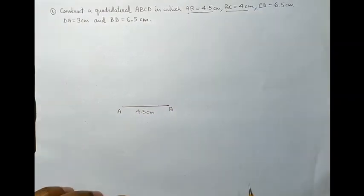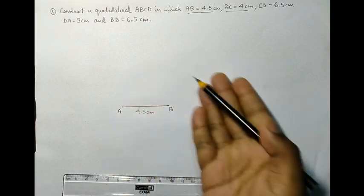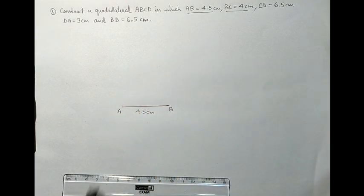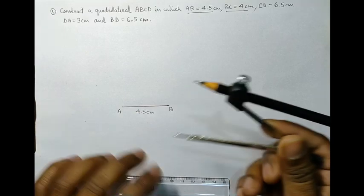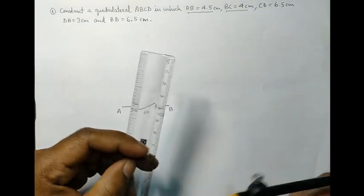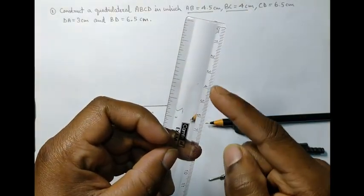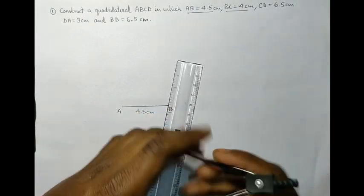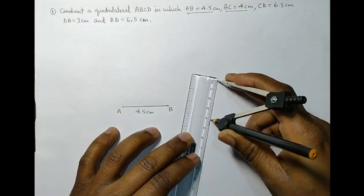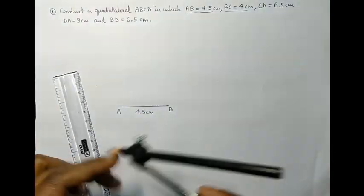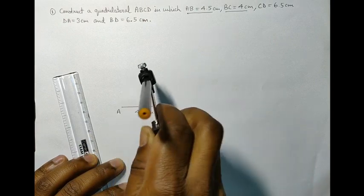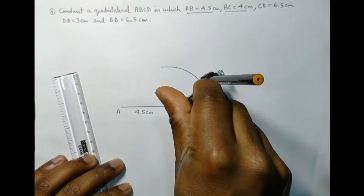Now, the next measurement is given for BC, but we don't know where C is. So we will simply take the radius 4 cm using the ruler for BC. And we are going to cut an arc just on top of B somewhere.